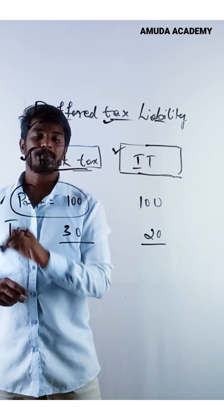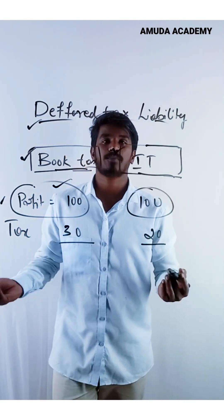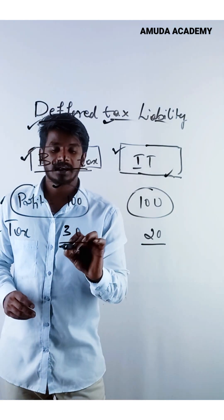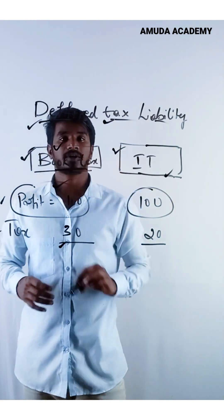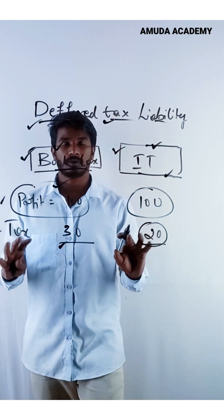So if the company's profit is 100 rupees in books of accounts and the same profit will be in the income tax, the tax payable is 30 rupees as per books of accounts and as per actual income tax, it is 20 rupees.